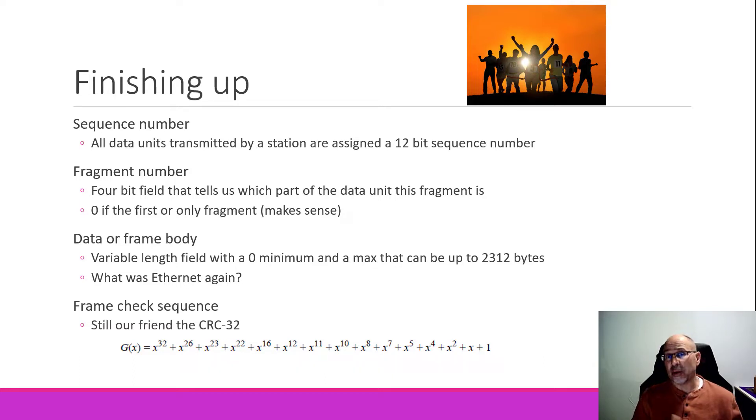Next up comes the data field, which we saw in the Ethernet frame. And we know that in Ethernet frame, the value can be from 46 bytes to 1500. Well, in wireless, it can be a zero byte minimum, and up to a maximum of 2312 bytes. Remember, this is not Ethernet. That's variable, and it depends a lot on whether or not you're using encryption, or whether or not you've got additional fields going on in the header, but it's got a maximum of 2312 bytes.